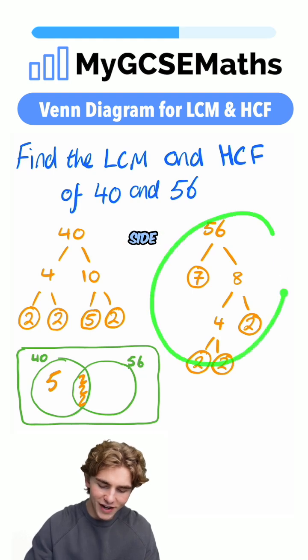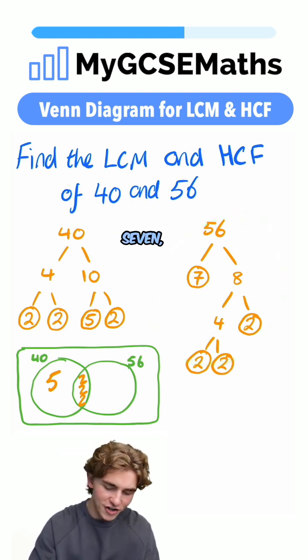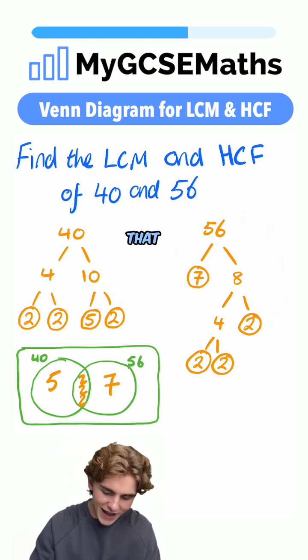And likewise, on the right-hand side, we can see that 56 has a prime factor of seven, but 40 doesn't. So we're going to write that on the right.